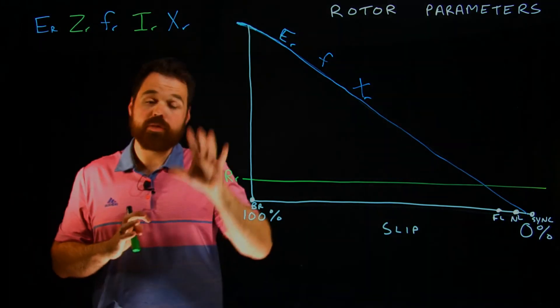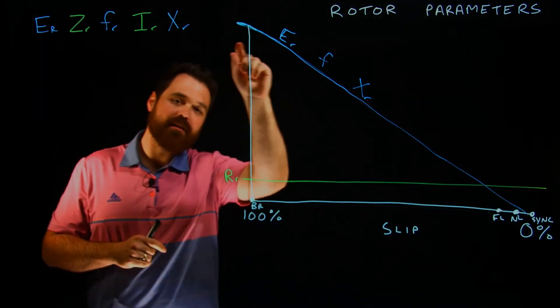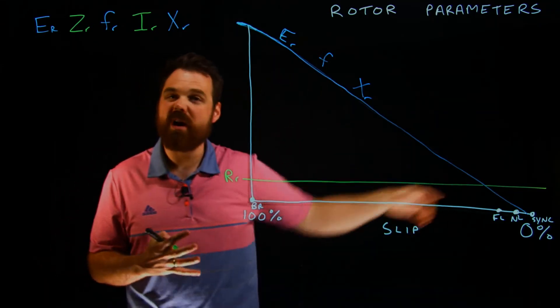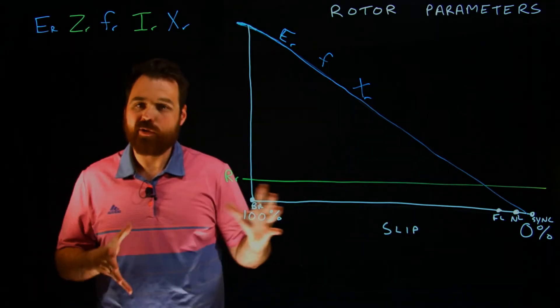So now, these two, they are proportional to slip, but they're not linear. They're not directly proportional.